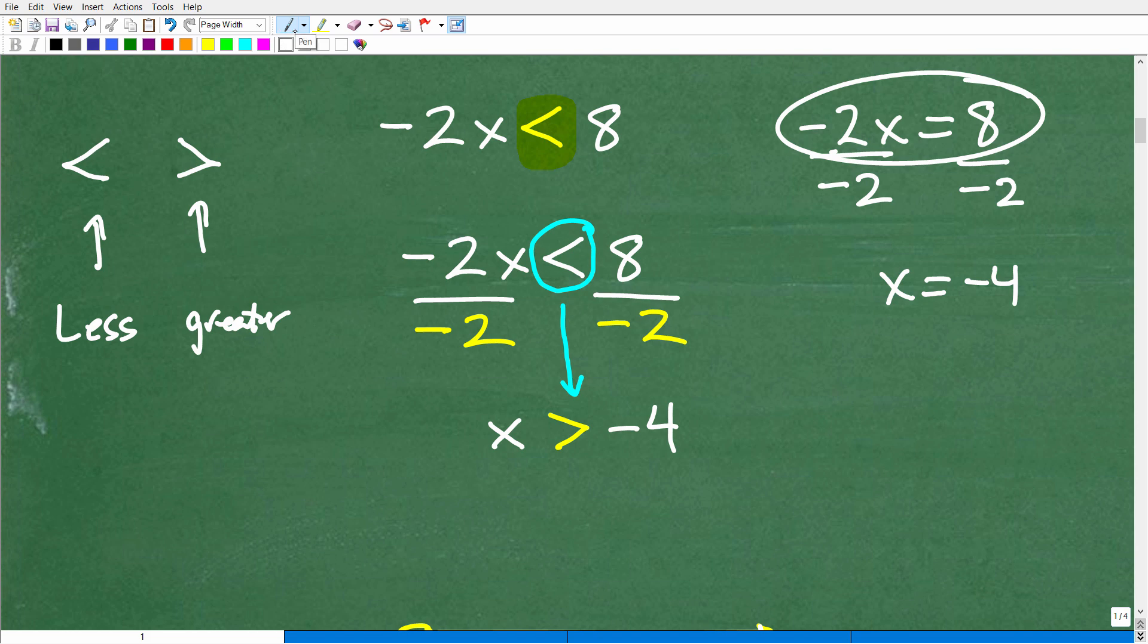Well, when you're doing inequality problems, you really have to pay attention to this situation. If you divide inequality by a negative number, both sides of inequality by a negative number, or multiply both sides of inequality by a negative number, your inequality symbol gets reversed.